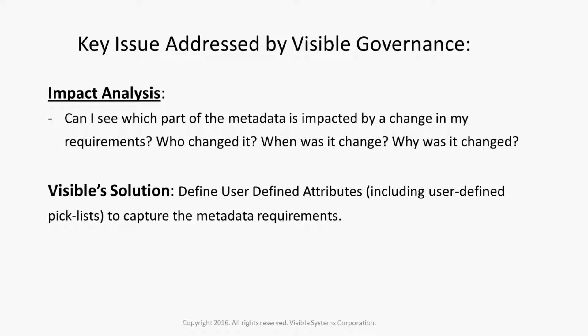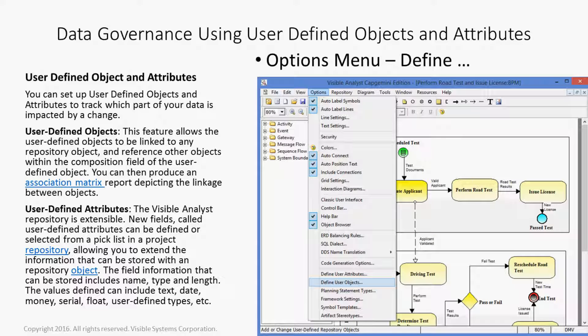Another issue addressed by visible governance is impact analysis. Can I see which part of the metadata is impacted by a change in my requirements? Who changed it, when was it changed, and why was it changed? The visible solution is to define user-defined attributes, including user-defined picklists, to capture the metadata requirements. You can set up user-defined objects and user-defined attributes to track which part of the data is impacted by the change.